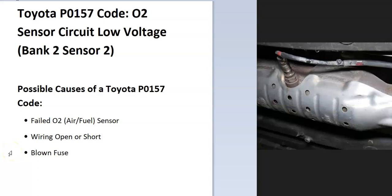Today I'm talking about a Toyota with the P0157 code, what it is and how you go about fixing it. What is a Toyota P0157 code? It's an O2 sensor circuit low voltage bank 2 sensor 2.